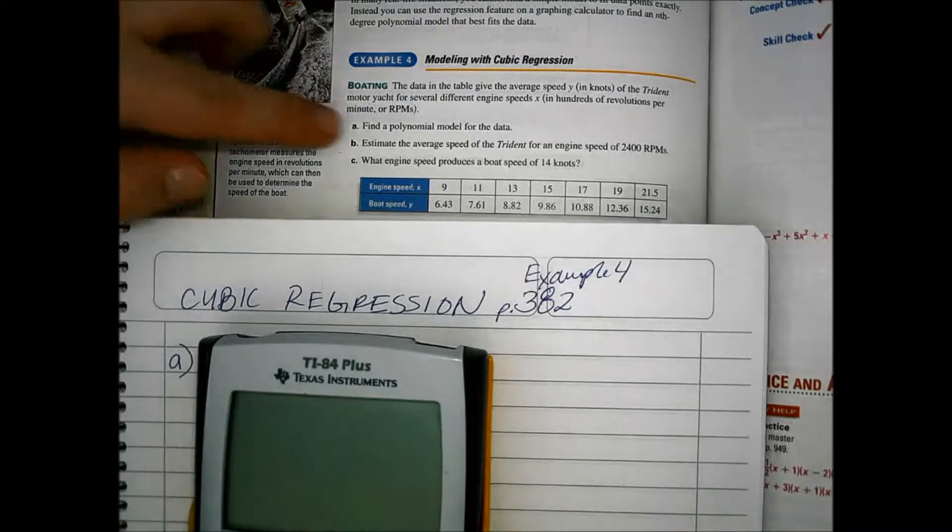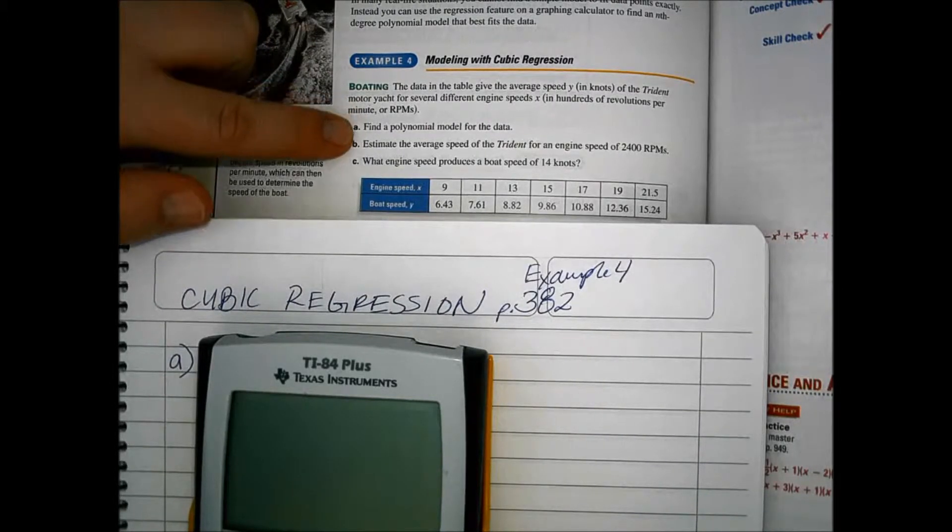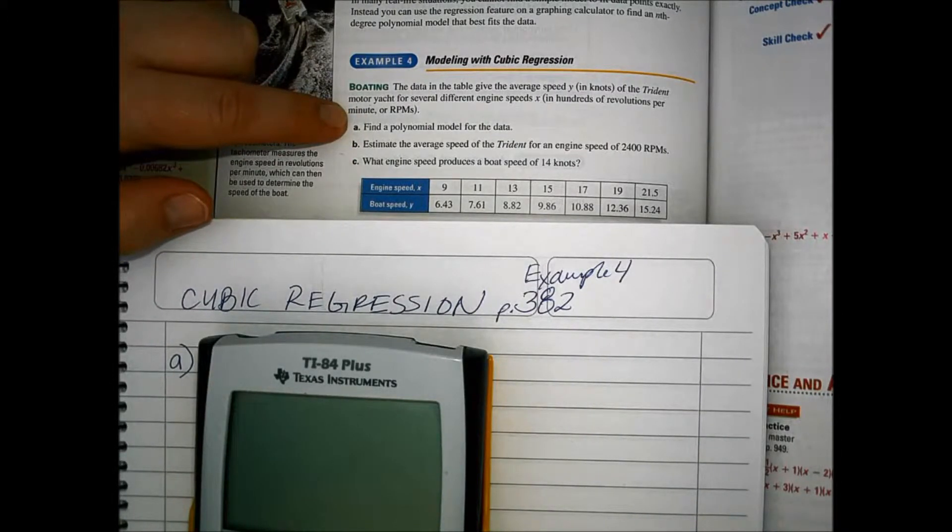The very first thing, we need our polynomial in order to do B and C. That's part A.